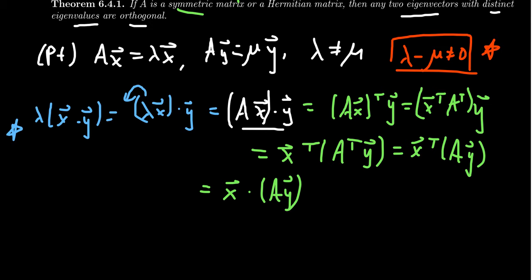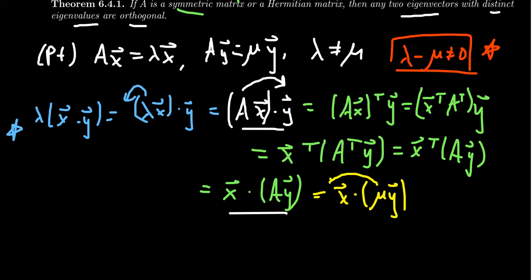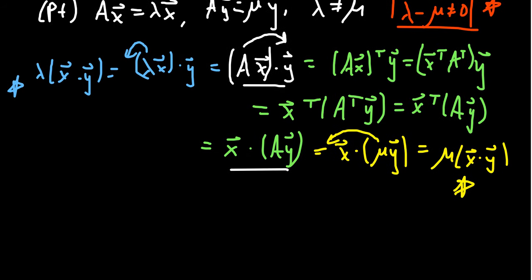This is significant: for symmetric matrices, AX dot Y equals X dot AY — the matrix acts somewhat like a scalar in the dot product. Since Y is also an eigenvector of A with eigenvalue mu, we get X dot AY equals mu times X dot Y. So we've now shown that lambda times X dot Y equals mu times X dot Y.